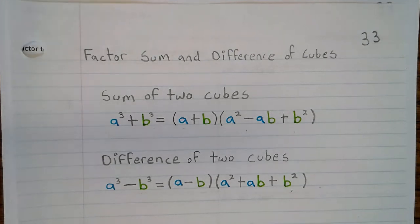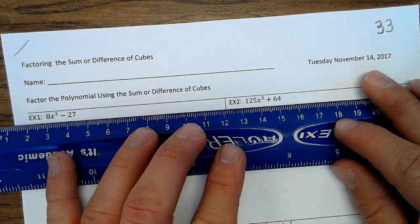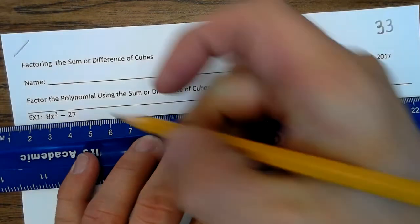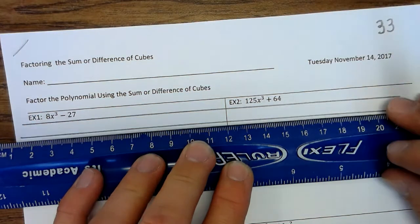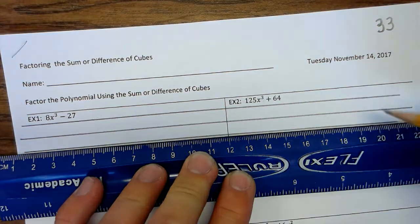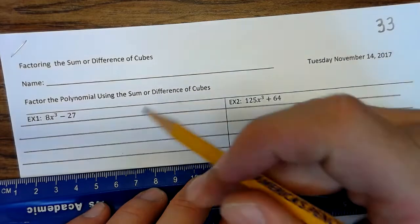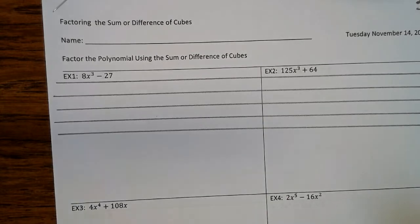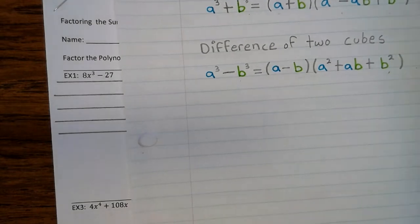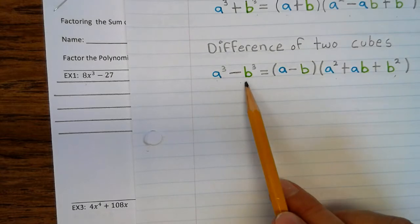All right, now your notes are updated. Let's take a look at the examples. And again, you probably want to draw lines to keep your work organized. All right, so example one. So it looks like we have A cubed minus B cubed. So we're going to use this formula. But we have to understand what A and B are.